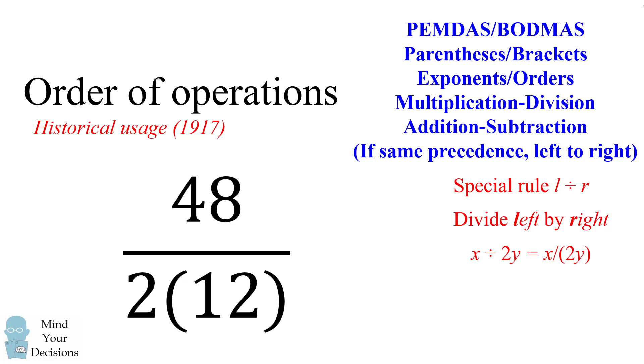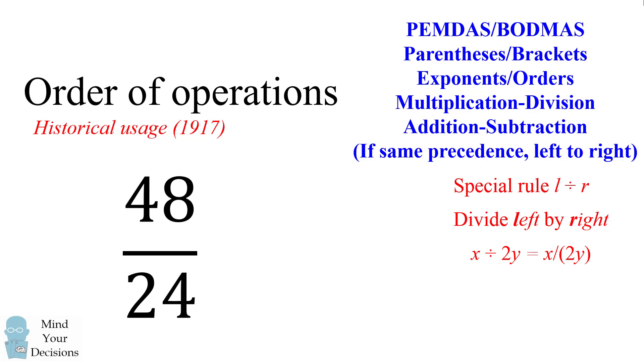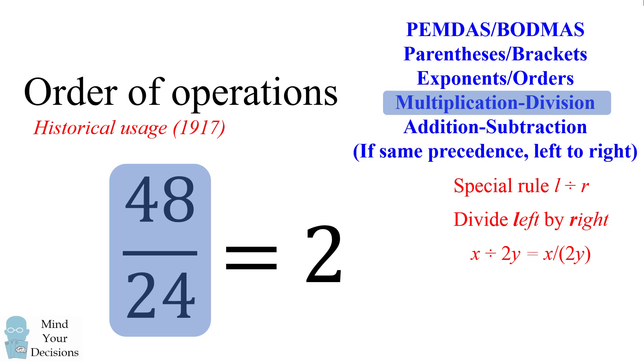We now simplify the denominator, which has a multiplication. 2 times 12 will be equal to 24. And then we finish out 48 divided by 24, which is equal to 2.